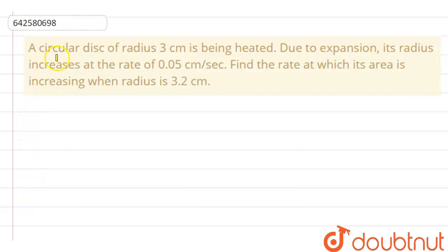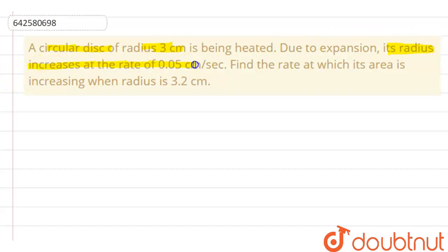Here the question is: a circular disk of radius 3 cm is being heated. Due to expansion, its radius increases at the rate of 0.05 cm per second. Find the rate at which its area is increasing when radius is 3 cm.